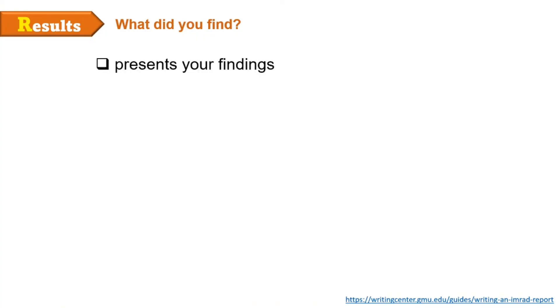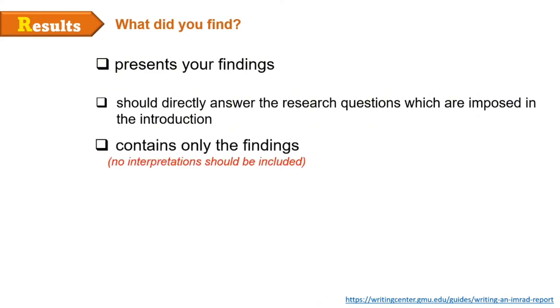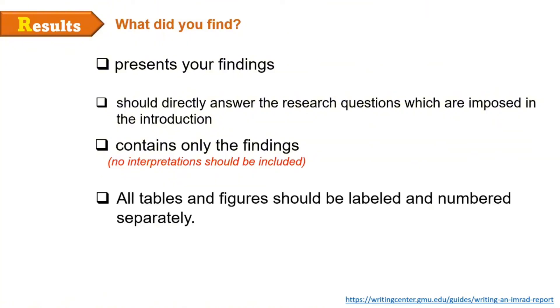After the methods is the results section, where you answer the question: What did you find? In this section, you present your findings. The results should directly answer the research questions posed in the introduction. The results section contains only the findings — remember that no interpretations should be included in this section. Make sure all tables and figures are labeled and numbered separately.